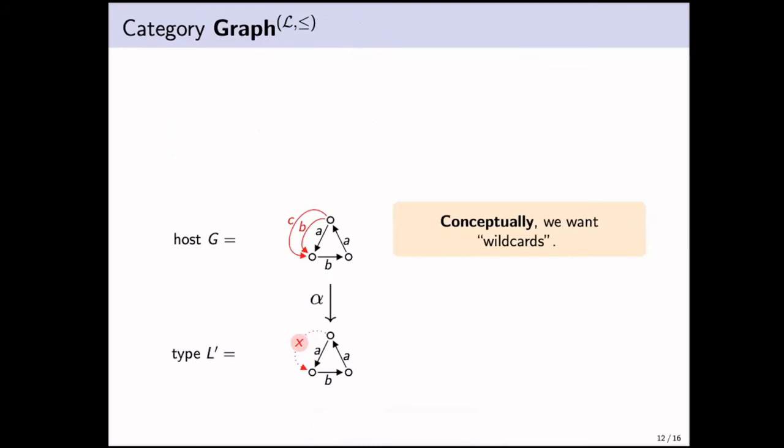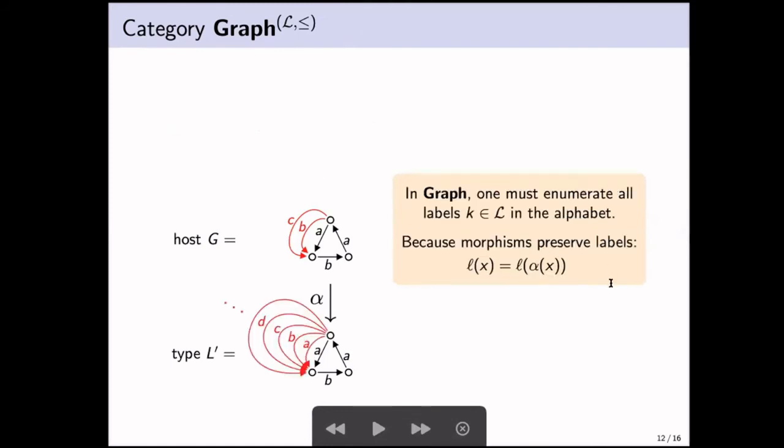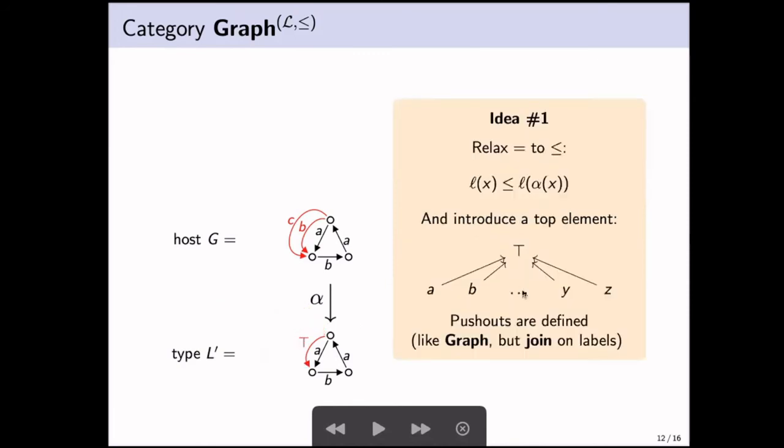As previous examples show, the converse does not hold because of these potentially global effects that you cannot control in a non-deterministic setting. Now, there is one orthogonal issue, but it relates to what I discussed in the beginning. Conceptually, we wanted to have some sort of notion of wildcard. So in the type graph L', to be able to specify that you want to allow additional edges alongside this edge A, for instance. In graph, this is cumbersome because you would have to enumerate all the labels in the alphabet because morphisms preserve labels.